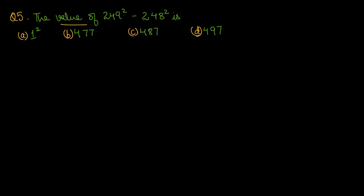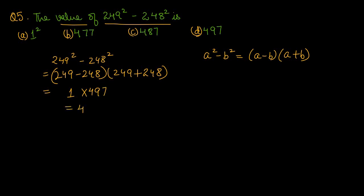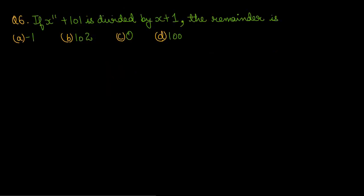Question number 5: the value of 249 square minus 248 square is. हमें एक formula आता है a² - b² = (a - b)(a + b)। तो यह बन गया (249 - 248)(249 + 248) = 1 × 497 = 497। So option number D is the right one.